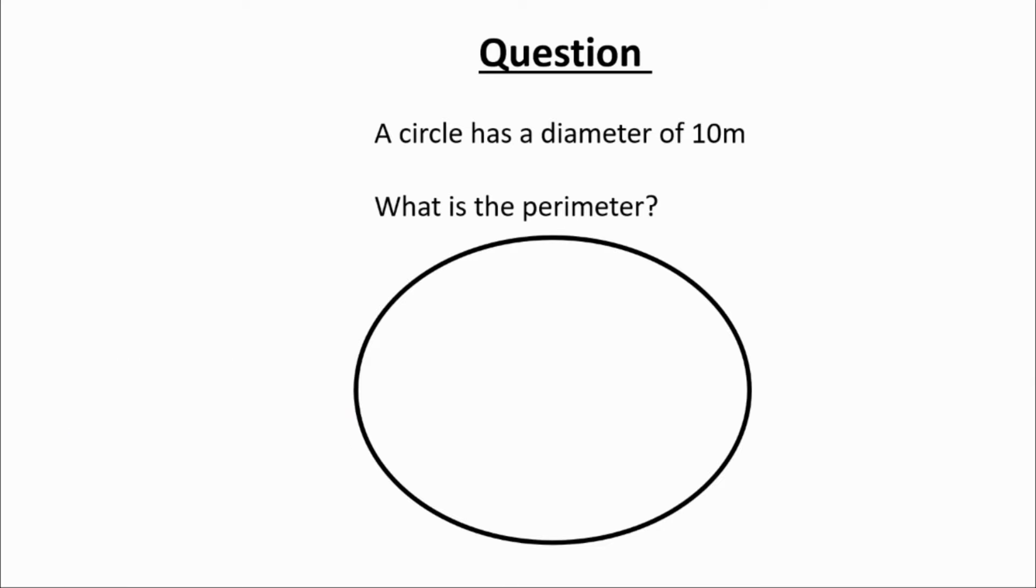We're going to look at a circle that's got a diameter of 10 meters and calculate what the perimeter of this circle would be.